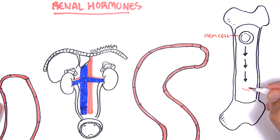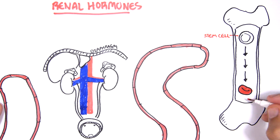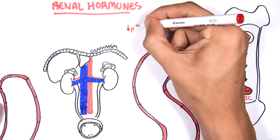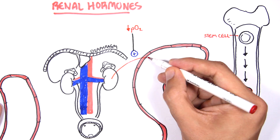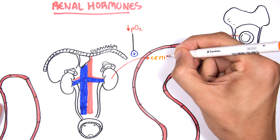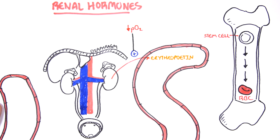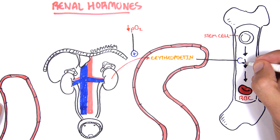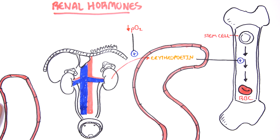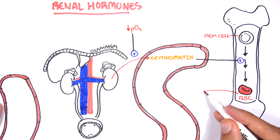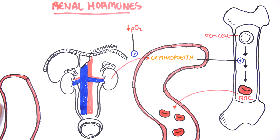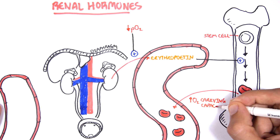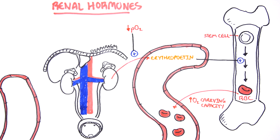During periods of hypoxia, or where we have a decrease in partial pressure of oxygen, the kidneys will begin producing erythropoietin. A decrease in oxygen essentially will stimulate the kidneys to produce erythropoietin, which is a hormone that stimulates erythropoiesis — the production of red blood cells. It will stimulate stem cells to produce red blood cells, increasing oxygen carrying capacity, thereby trying to replenish the diminished oxygen in our body.